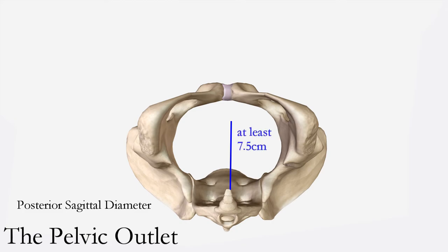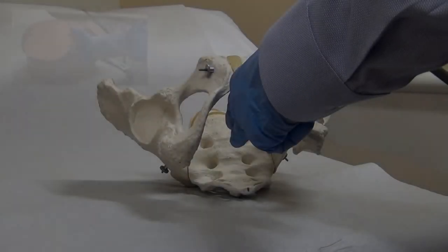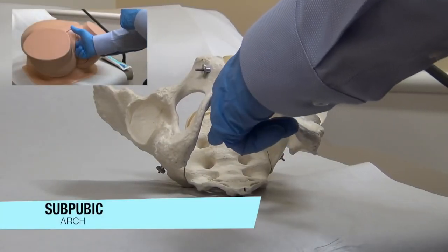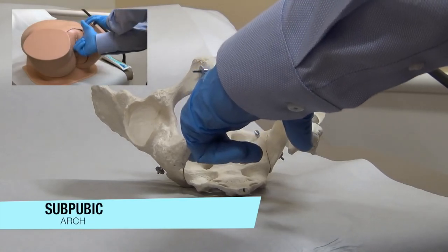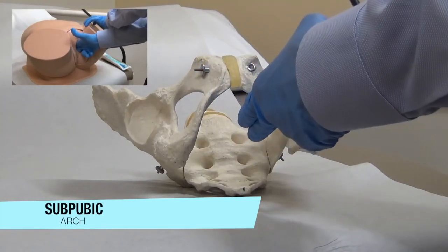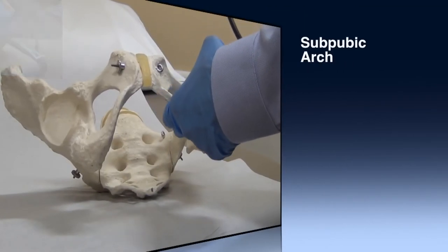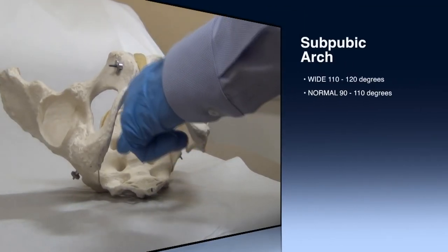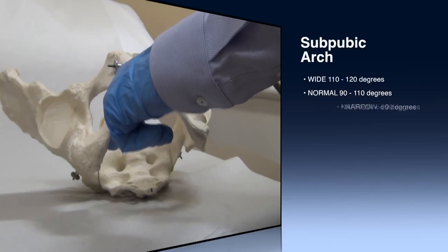Measurements above 8 cm are considered adequate for the pelvic outlet. To assess the sub-pubic angle, place the thumbs next to each inferior pubic ramus, estimating the angle at which they meet. Normally, this angle accommodates two fingers, indicating at least 90 degrees.